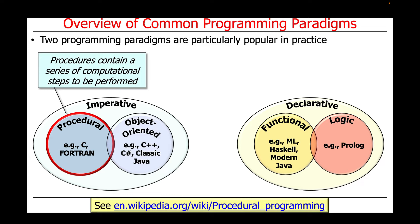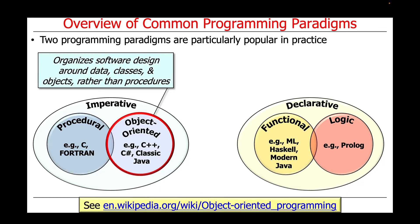Examples of procedural languages include C and Fortran. Another category of languages within the imperative paradigm are object-oriented languages, which organize software design and programming around data, classes, and objects, rather than procedures.